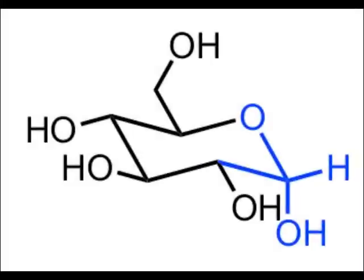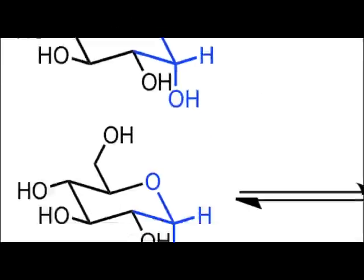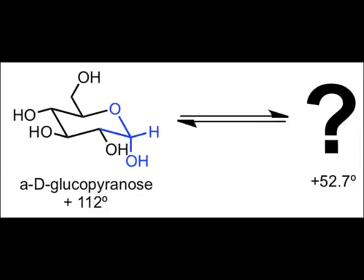One way to test this hypothesis is to begin with a pure sample of the alpha-anomer. If we place the alpha-anomer in solution and let it sit for a few days, we should expect it to eventually reach the same equilibrium state — that is, the same specific rotation value that the beta-anomer reached — assuming our hypothesis about equilibration of the anomers is correct.